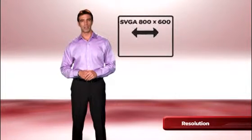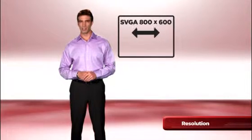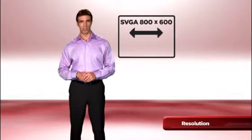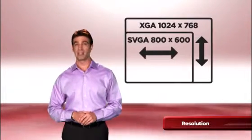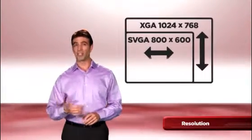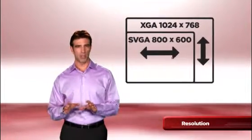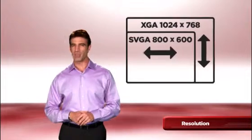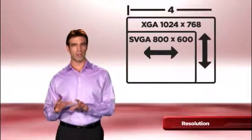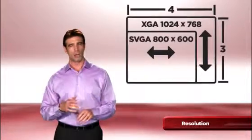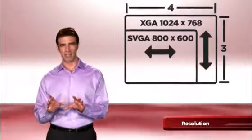First is 800 by 600 pixels, or SVGA resolution, and is the minimal resolution normally found in business projectors. Then there is 1024 by 768, or XGA resolution. It has higher resolution and is sharper than an SVGA image. Both SVGA and XGA projectors project a 4 by 3 aspect ratio, or more of a square-shaped image. It's sometimes referred to as a standard screen size.